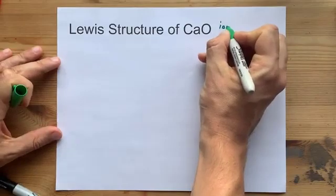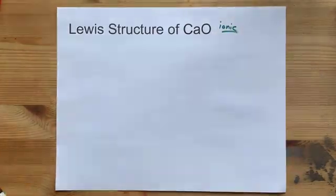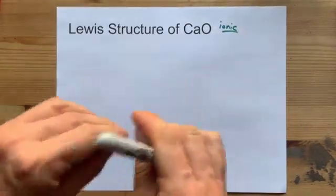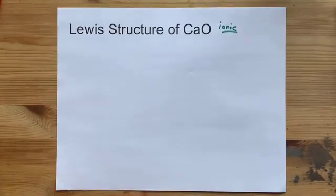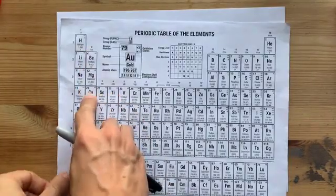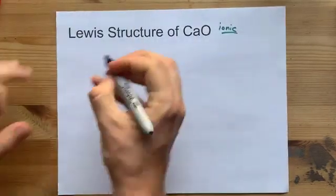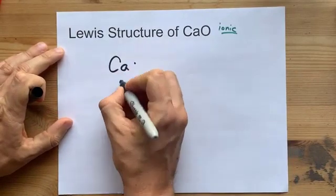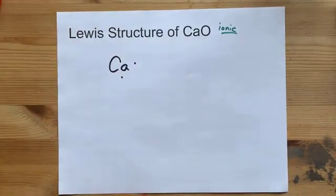Metals and non-metals combine to make ionic compounds because there's a transfer of electrons from one to the other. Here, calcium is in the second column and brings two valence electrons with it. So I'm going to draw the Ca, one, two valence electrons.